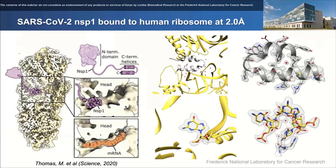Various viruses employ strategies where they try to shut down the host translation system. There are many potential benefits — shutting down the host immune response and redirecting resources to translate viral proteins. Nowadays, no virus is more famous than SARS-CoV-2. One part of SARS-CoV-2 involved in this strategy is non-structural protein 1, NSP1. It has been characterized structurally by various groups by both X-ray and cryo. Yana thought: let's see what we can add to the story and potentially have something actionable for antiviral drug design.